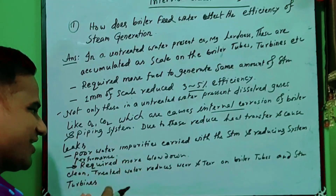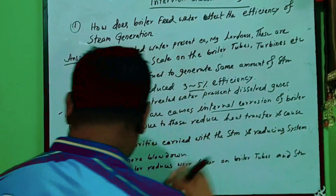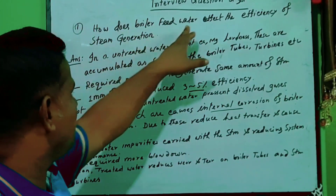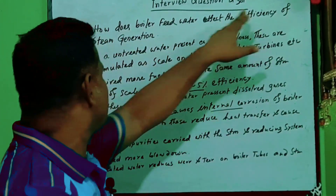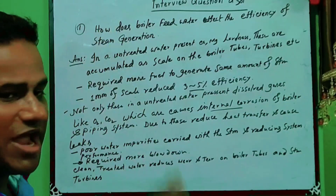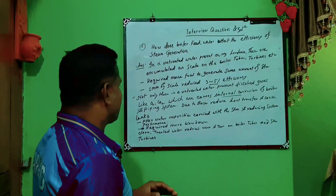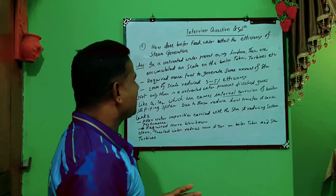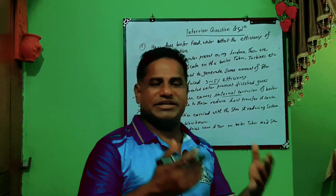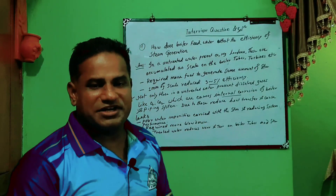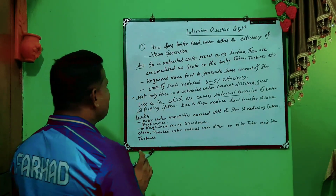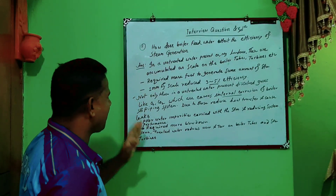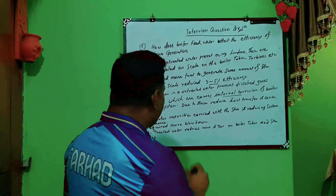In summary, clean treated water reduces wear and tear on boiler tubes and steam turbines. If you provide boiler feed water, efficiency will be increased; if you provide untreated water, efficiency will decrease — as explained through the four problems covered in this video.